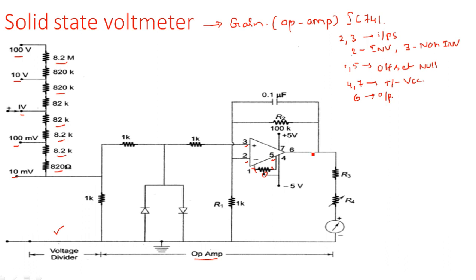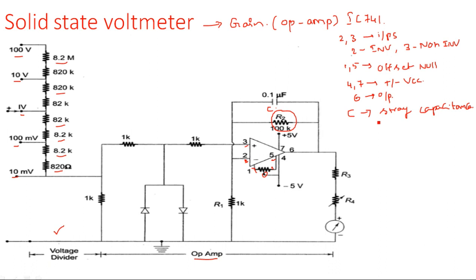That is the meaning of offset null. R2 is the feedback resistor connected from the output back to the inverting input. The capacitor C, which is 0.1 microfarad, is connected in the feedback to prevent the stray capacitance effect — stray capacitance caused by human touch at any point of the circuit.